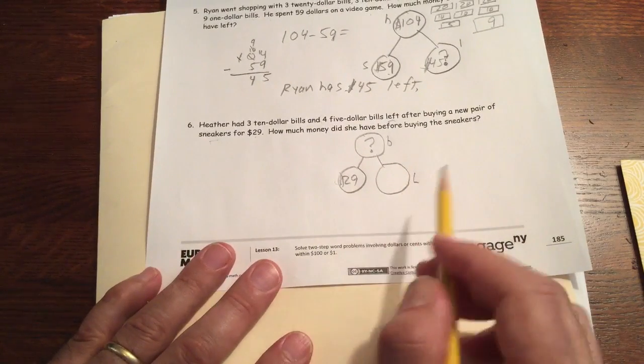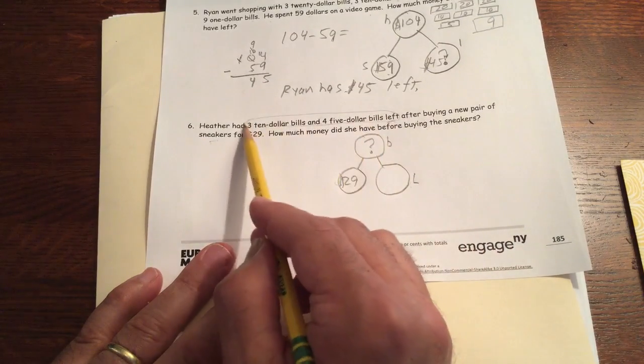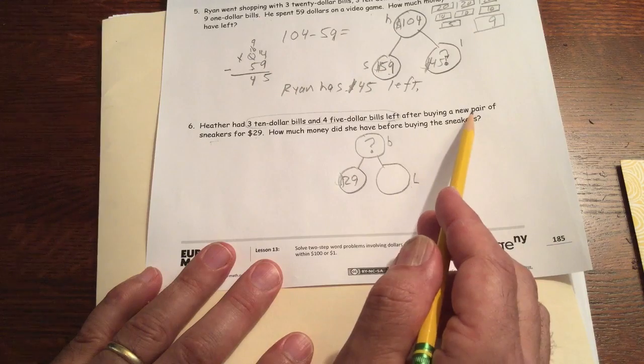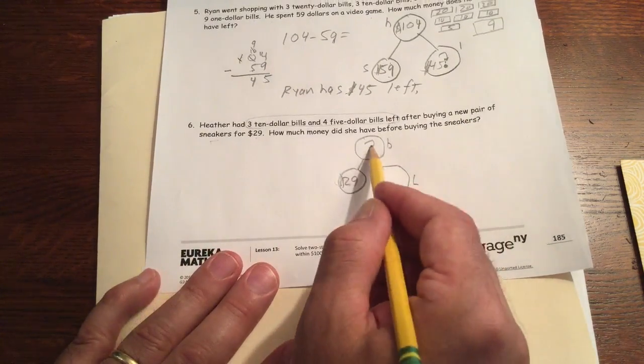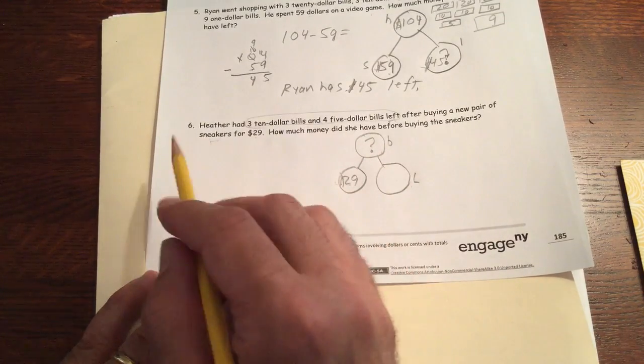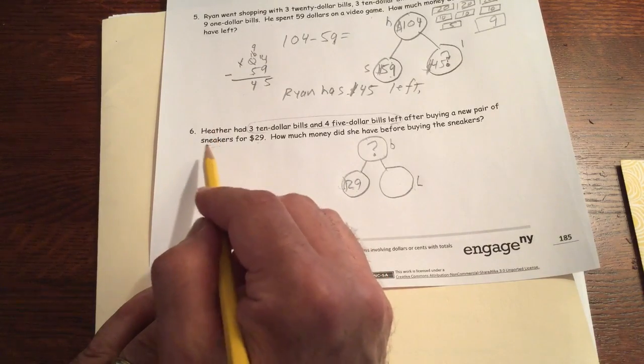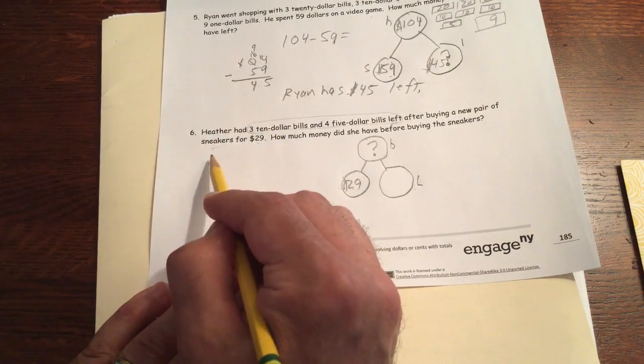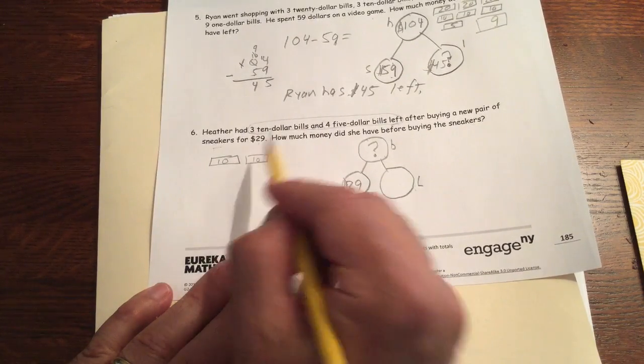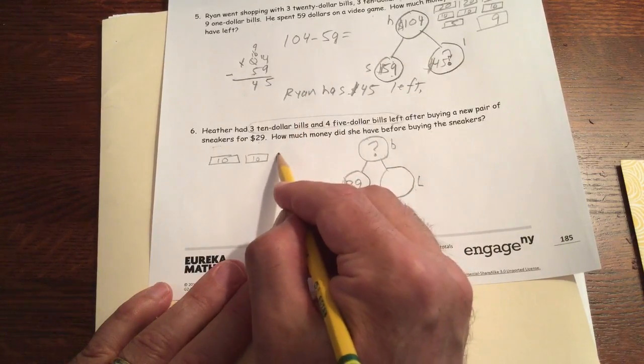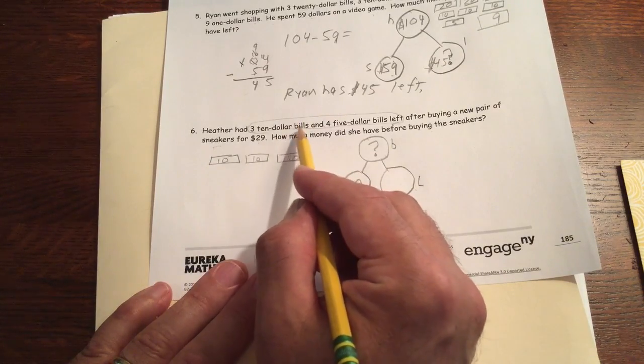So let's see. We could just draw whatever she had left, and then add the $29 to it. And then we'd have the total. And we could just count it all. So here's just a way you could do it if you're just drawing all the dollar bills. All the money. She had three $10s. And you could do all these just drawing the bills or the coins and counting or crossing out.